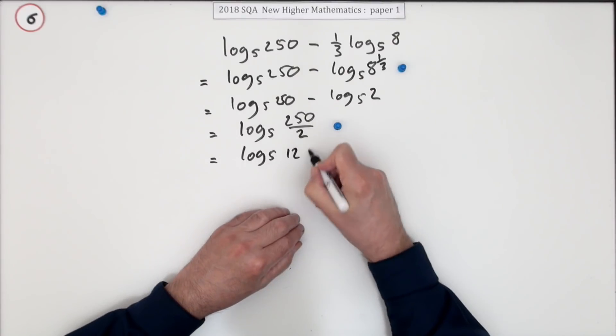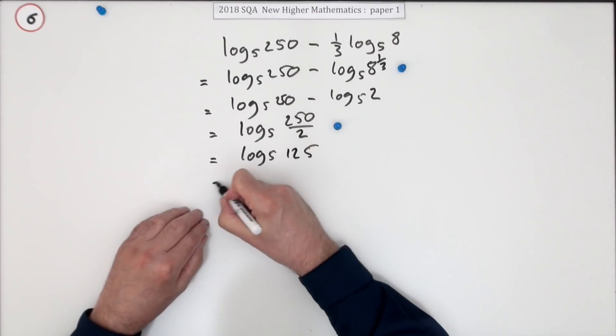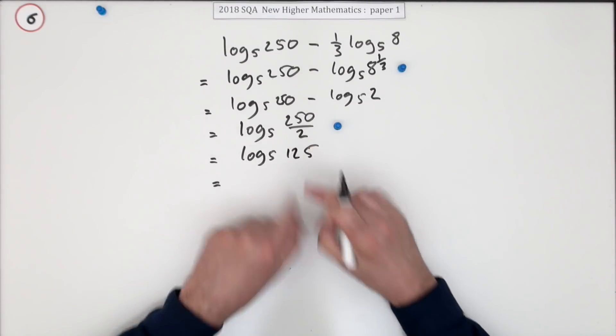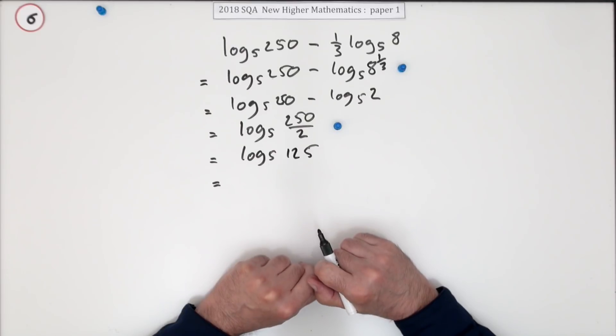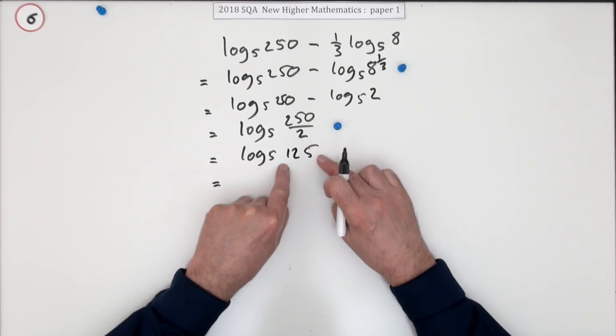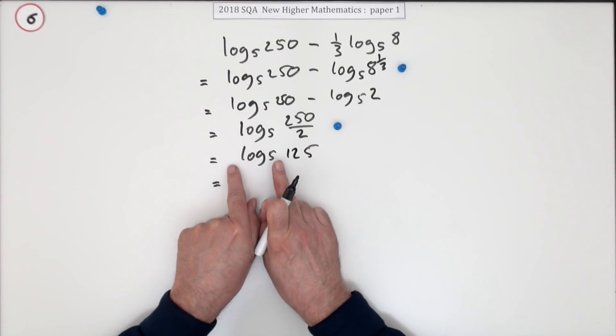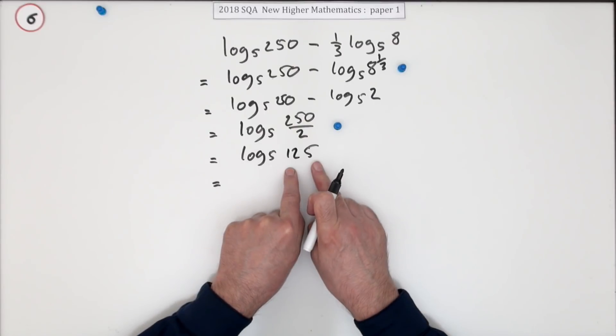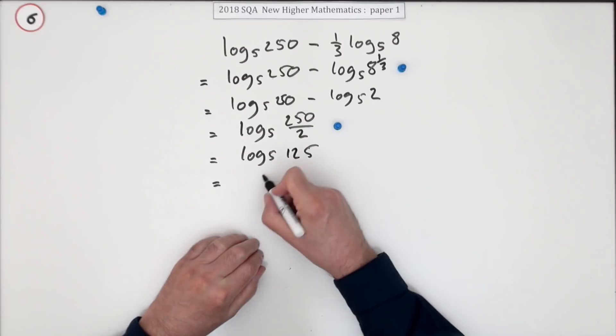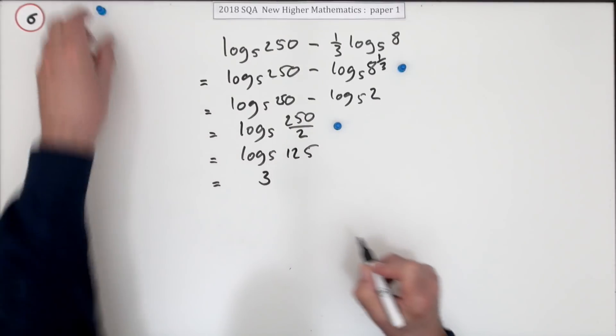Tidy up: 250 divided by 2 is 125. Now you've got an expression where you do know the answer — this says what power of 5 gives 125, and that's 3.